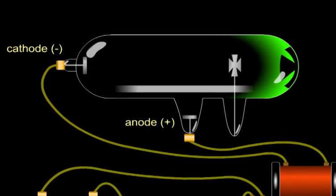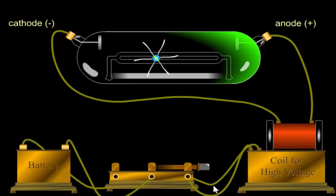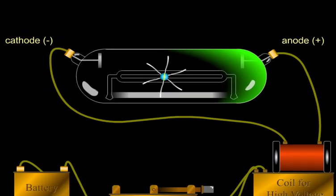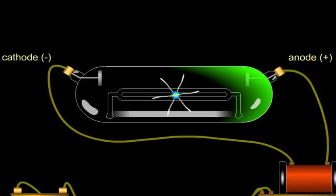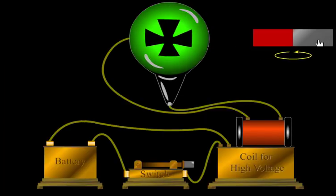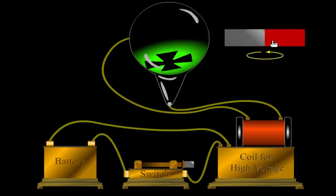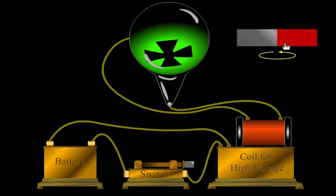These cathode rays were blocked by thin metal, and could even make a wheel turn. Light couldn't do this, so maybe they were particles of some kind. Crookes also found that they could be deflected by a magnet, and the direction suggested that they had a negative charge.